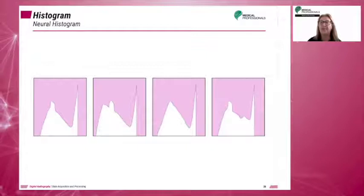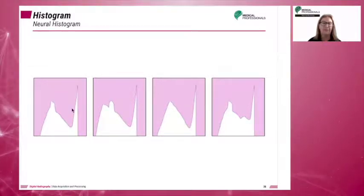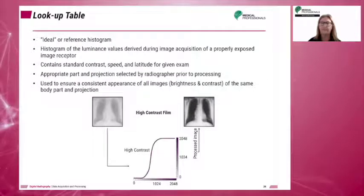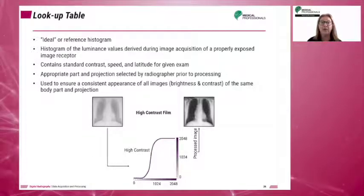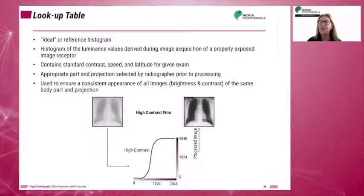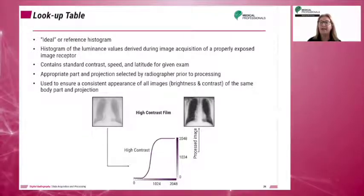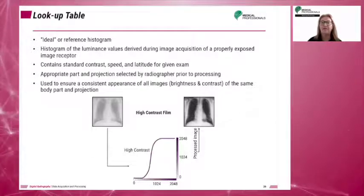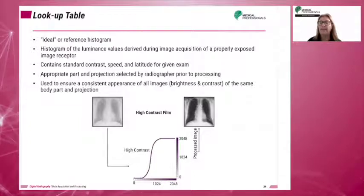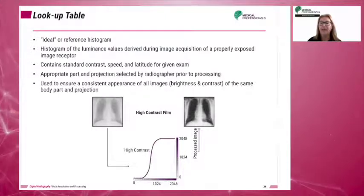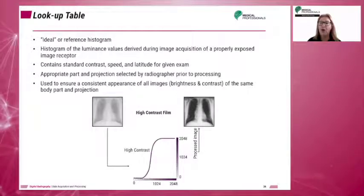Here we see a neural histogram in which predefined data are matched to the exposure data extracted from the IR. The lookup table, or LUT, can be thought of as an ideal or reference histogram for every anatomical part and projection. The lookup table is a processing function that applies processing algorithms to the image data to assign the correct grayscale to the values of interest, or VOI. The appropriate body part and projection is selected from a menu by the radiographer, and the lookup table is applied to evaluate the raw data from the exposure.